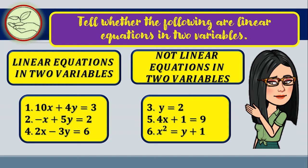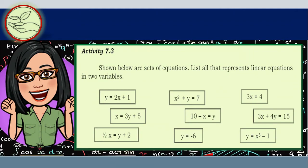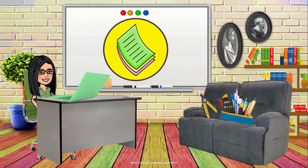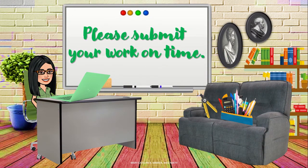I hope you can already give examples of these kinds of equations. For activity 7.3, which you are going to answer on a separate sheet of paper, you have a set of equations and you need to list all that represent linear equations in two variables. Please submit your work on time. Were you able to distinguish linear equations in two variables? You did it well!